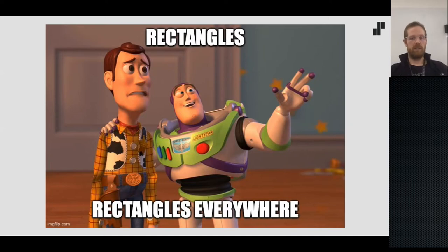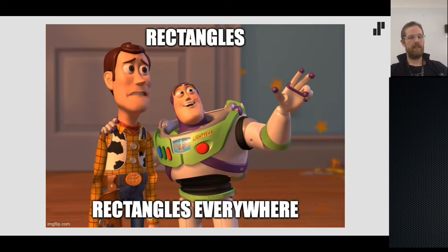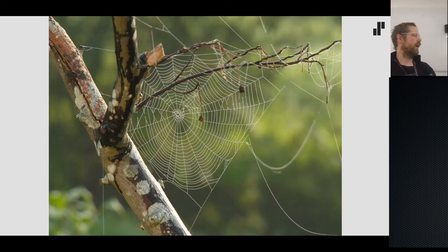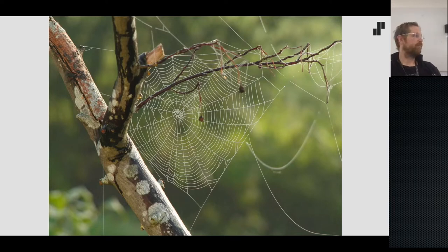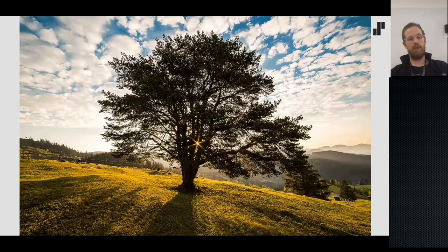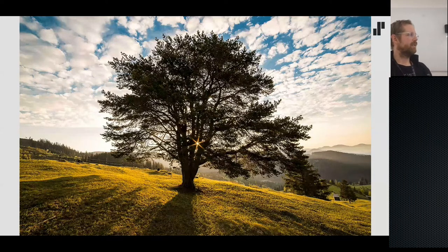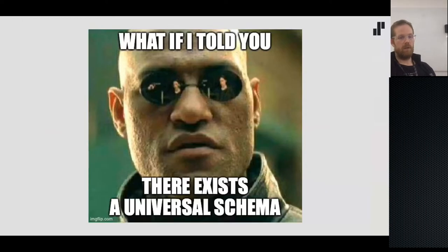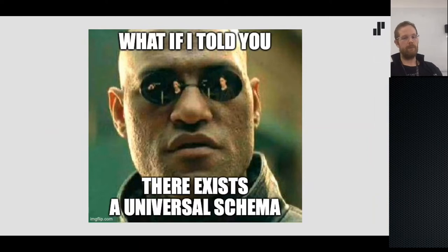This is the 'wide table problem.' Your data more often looks like a web or a tree. You could normalize everything to its last normal form, but what if there's a universal schema that exists instead of using these rectangles?